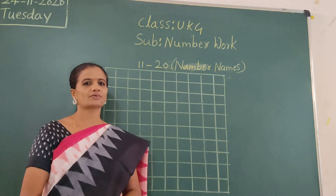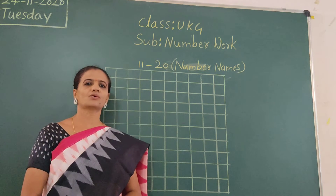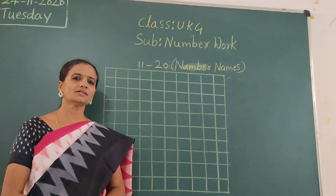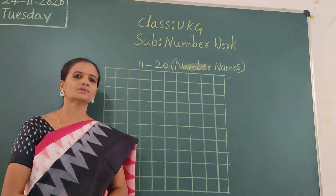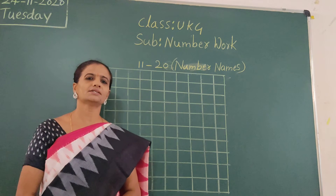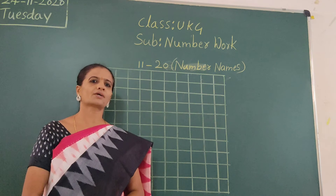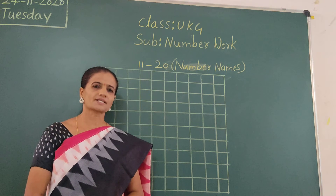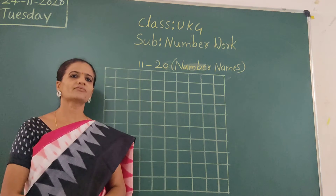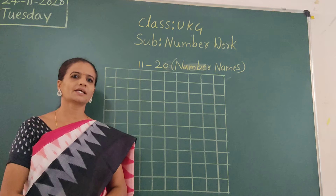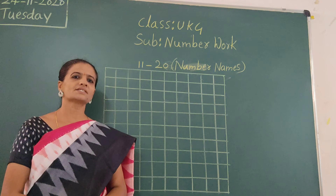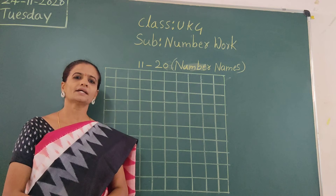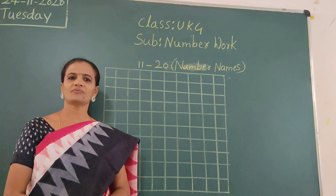So 11 to 20 — we already learned 1 to 20. Let's revise once: O-N-E 1, T-W-O 2, T-H-R-E-E 3, F-O-U-R 4, F-I-V-E 5, S-I-X 6, S-E-V-E-N 7, E-I-G-H-T 8, N-I-N-E 9, T-E-N 10. Already 1 to 10, we finished.